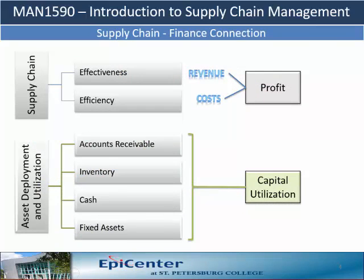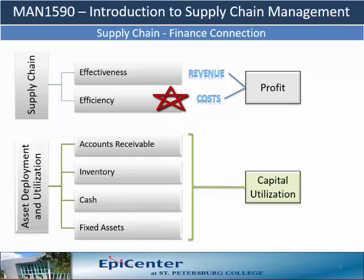The connection between supply chain and finance is made via performance measures. Supply chain effectiveness, such as a perfect order, impacts revenue. And supply chain efficiency, the time to fulfill an order, impacts operating costs, which in turn directly affect profit.